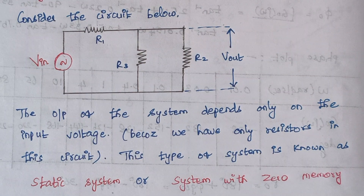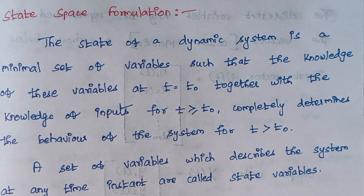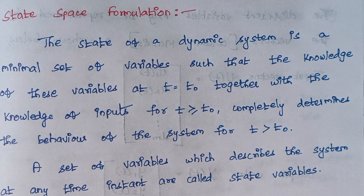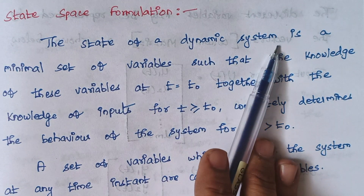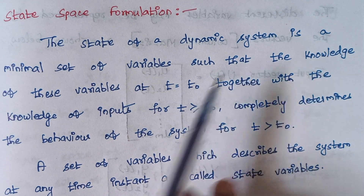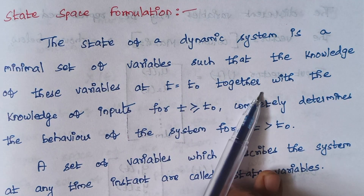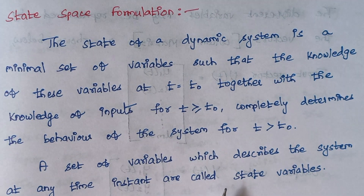To conclude, we are having two types of systems: one is known as static system and another one is known as dynamic system. Next we are proceeding with state space formulation. The state of a dynamic system is a minimal set of variables such that the knowledge of these variables, together with the knowledge of inputs, completely determines the behavior of the system.